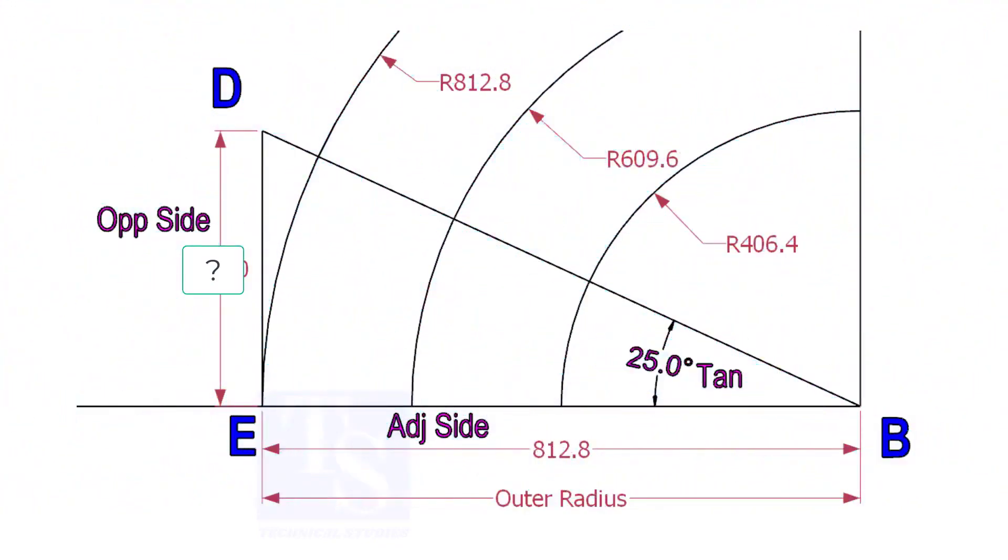Mark a line 25-degree rotated from the base line AB. To draw the line DB, we need to know the length of the line ED.